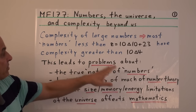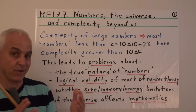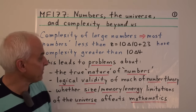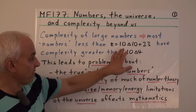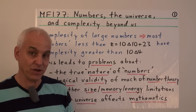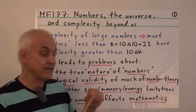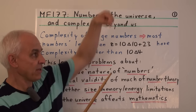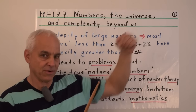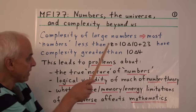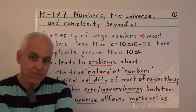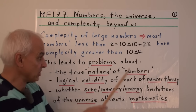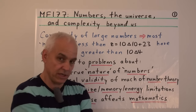We've been talking about large numbers and the complexity of large numbers, how efficiently we can write numbers down using basic arithmetical operations. A number like z equals 10▲10 + 23 is very efficiently written using triangle notation — that means a tower of 10 tens, i.e., 10 to the 10 to the 10 to the 10, altogether 10 tens stacked up as exponents. Most numbers less than z have complexity much larger than 10▲4, which is already an absurdly large number.